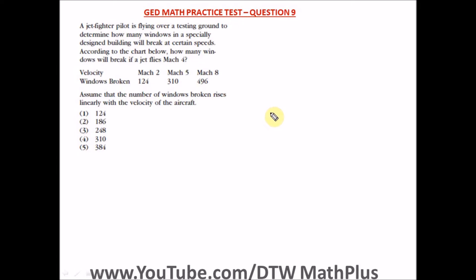Question 9 of the GED math practice test, part 1, that's the part with calculator. It says a jet fighter pilot is flying over a testing ground to determine how many windows in a specially designed building would break at certain speeds. According to the charts below, how many windows would break if a jet flies Mach 4? That's Mach 4.